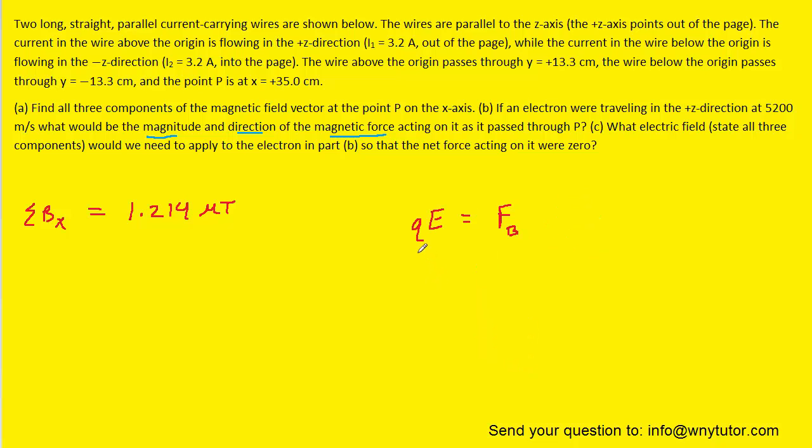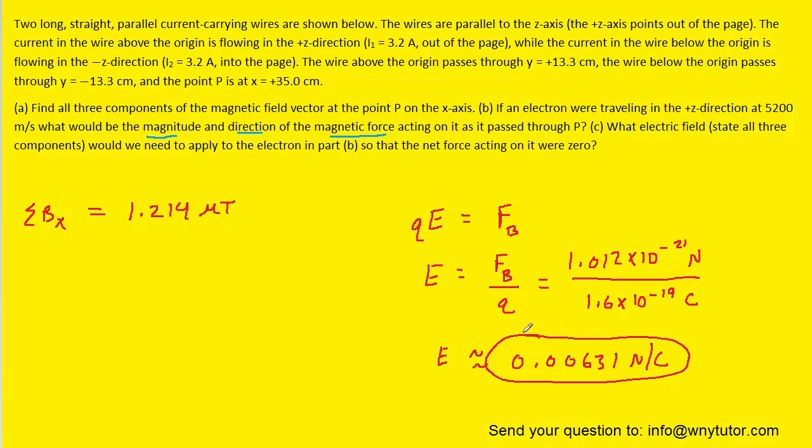We'll divide both sides by q to isolate the electric field E, and then we'll plug in the magnitude of the force and the magnitude of the charge. When we simplify that, we get an electric field magnitude of approximately 0.00631 newtons per coulomb. That's the magnitude of the electric field.